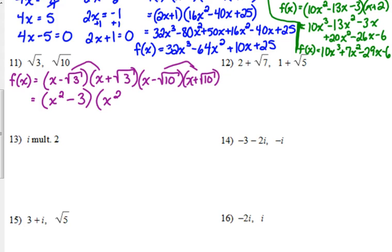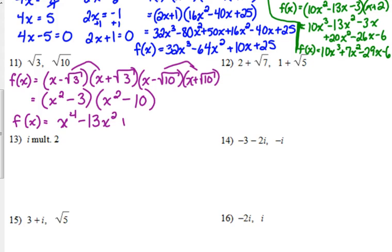x times x is x squared. The outside and the inside cancel. Negative times a positive is a negative. Square root of 10 times the square root of 10 is 10 — please don't write 100, it's the square root of 100 which is 10. Then all we have to do is FOIL this out. x squared times x squared is x to the 4th. Negative 10x squared and negative 3x squared gives us negative 13x squared. And negative 3 times negative 10 is positive 30.